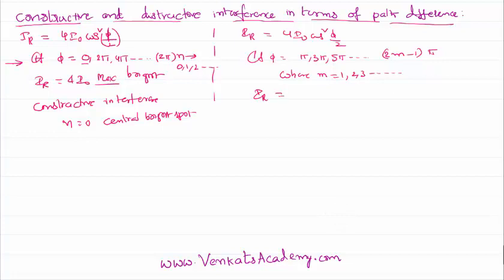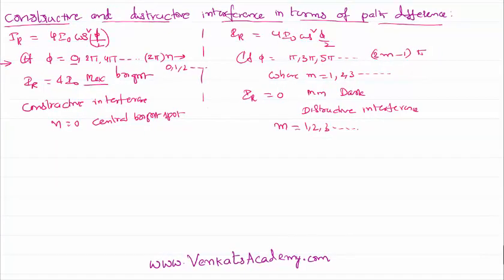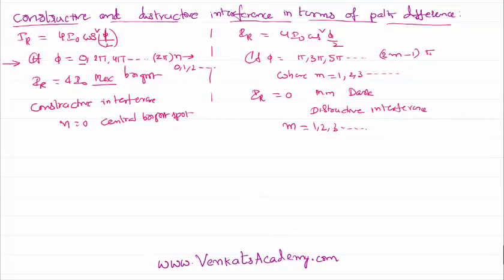In all these cases, I_resultant is 0, minimum, dark. This kind of interference is called destructive interference, where m starts from 1, 2, 3 onwards. This is how we get bright spots as well as dark spots in the interference pattern.